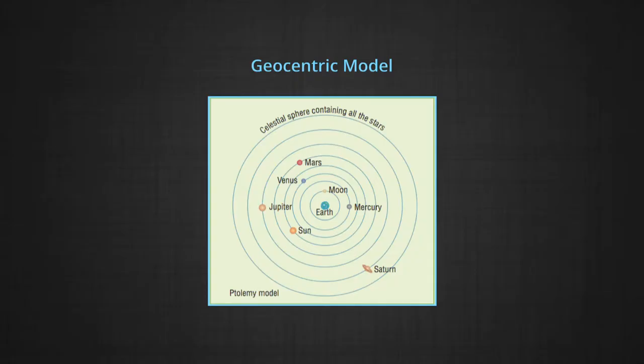According to this model, all celestial objects like the stars, the sun and the planets revolve around the earth in circular paths. For thousands of years, people believed in this model of the universe.